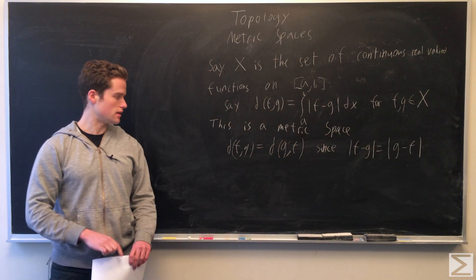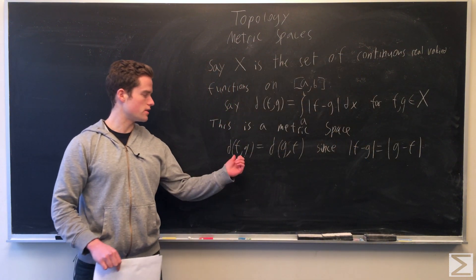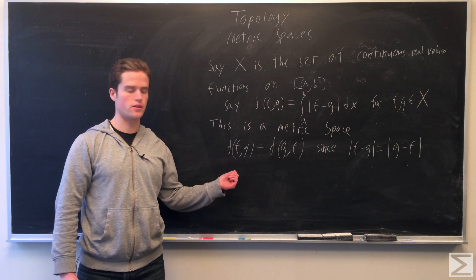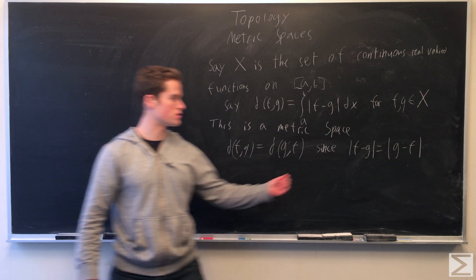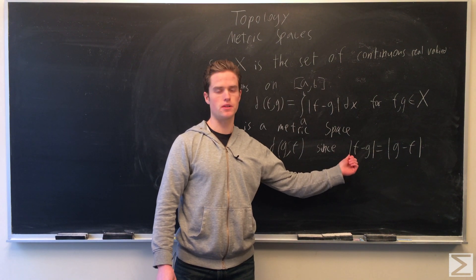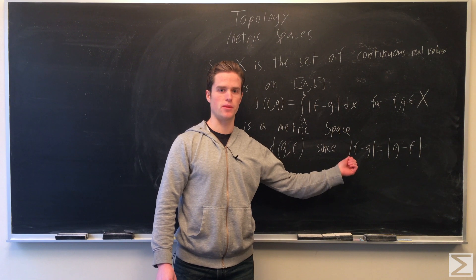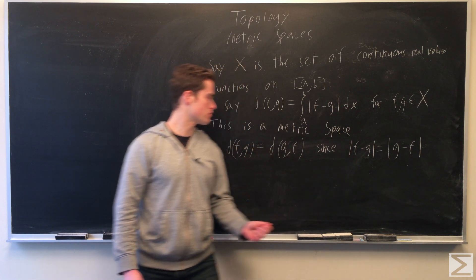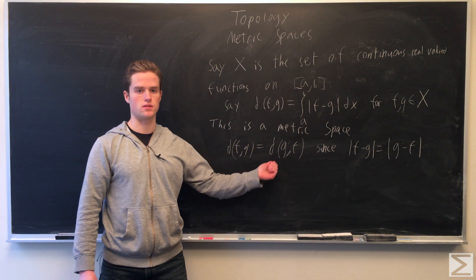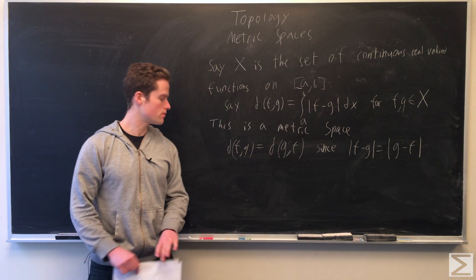It's easy to see that this function is symmetric simply because absolute values are symmetric: the absolute value of a minus b equals the absolute value of b minus a. So d(f, g) equals d(g, f).